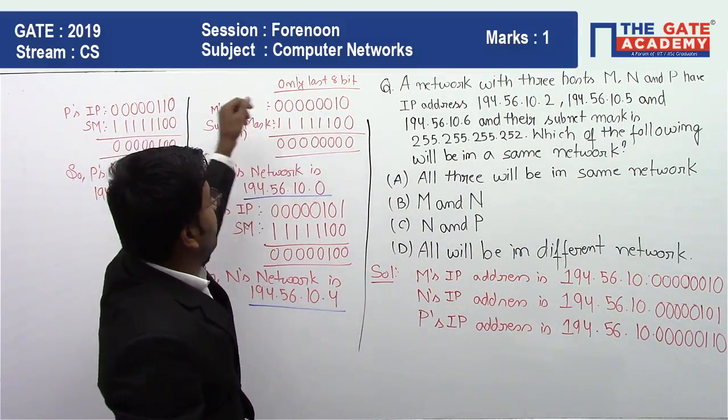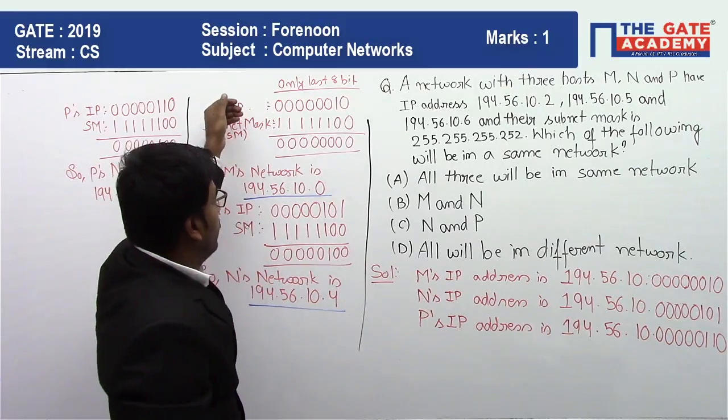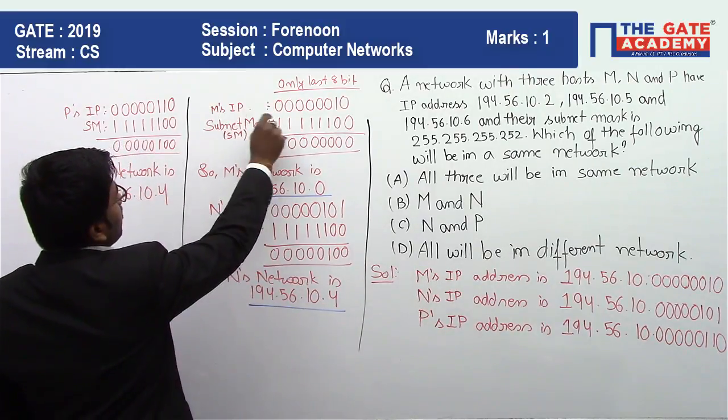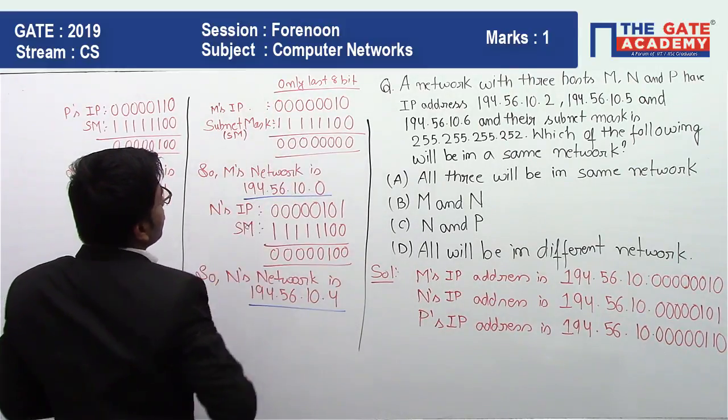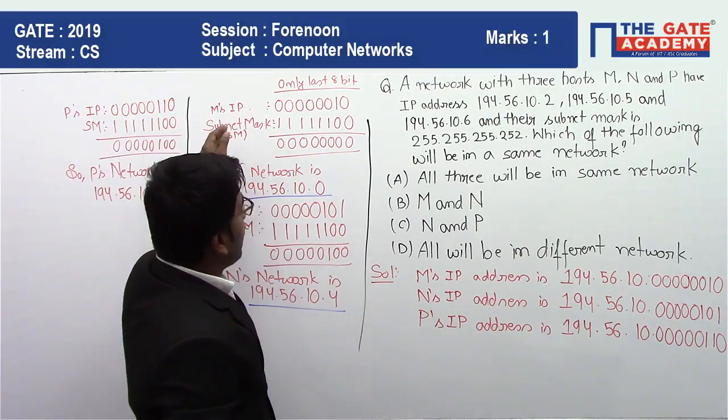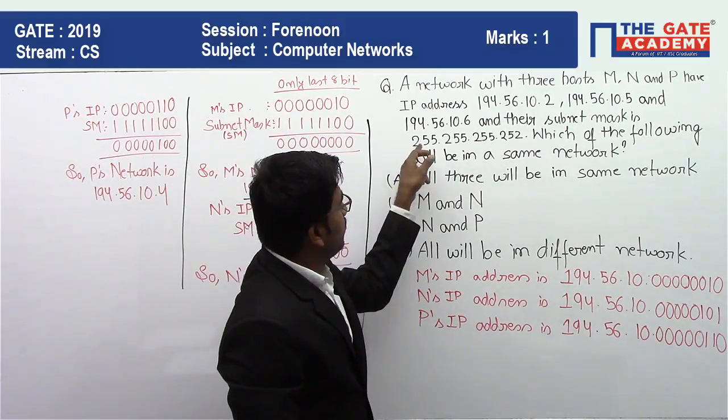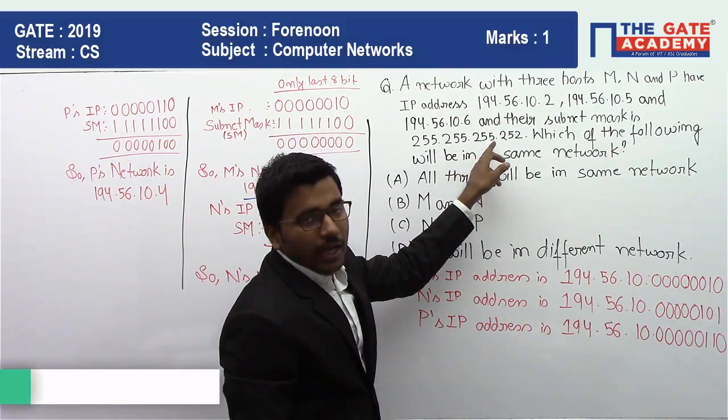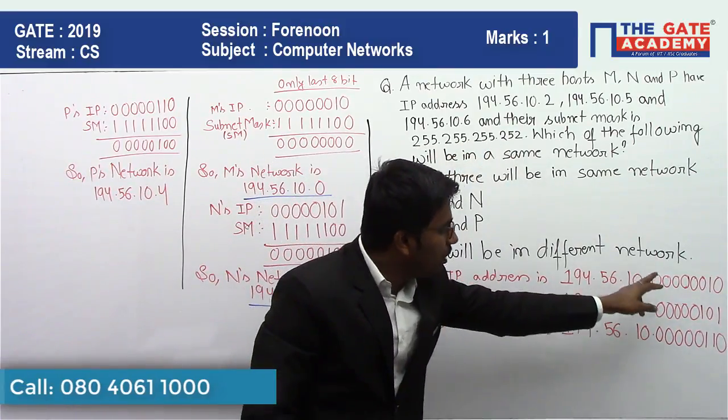Here only last 8 bits we are showing. So M IP's last 8 bits is this, then we have multiplied with subnet mask.